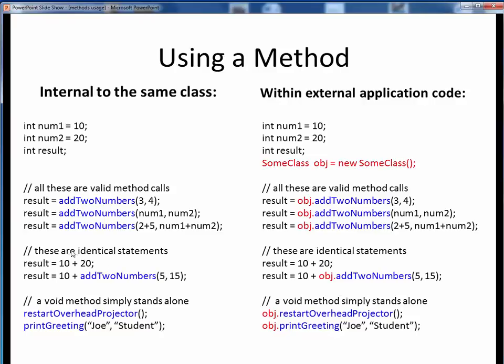Next, notice that these are two identical statements. If this method addTwoNumbers returns an int value, this entire expression rolls up into one single int value. So we can replace an int that's a literal like this with an int that's the result of some method call.